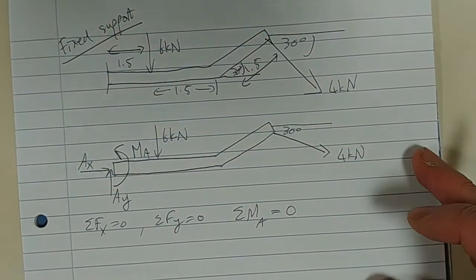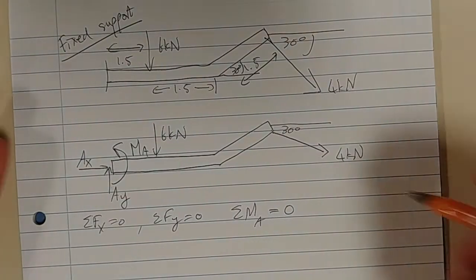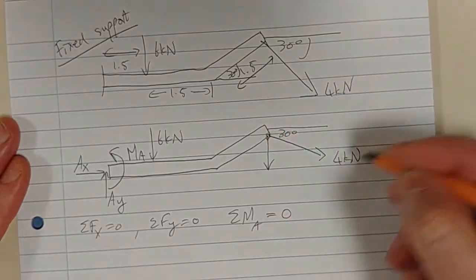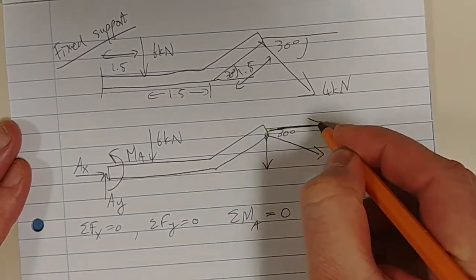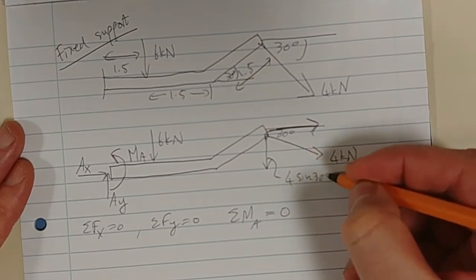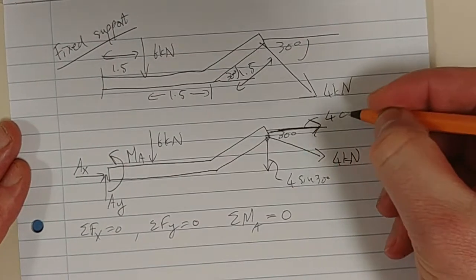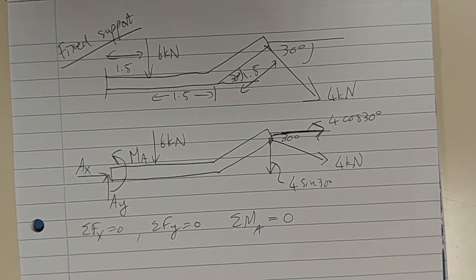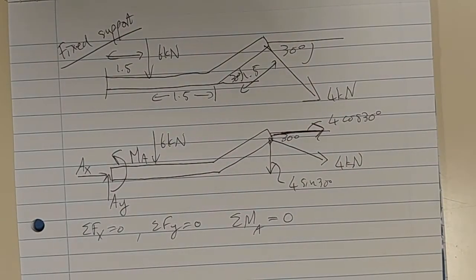So, let's start here. What would we say is the first thing to do? Well, let's break up this 4 kN into its x and y components. So, that would be 4 sin 30. That would be 4 cos 30. All right. Are you guys happy with that one?